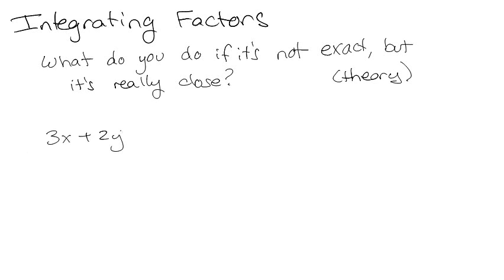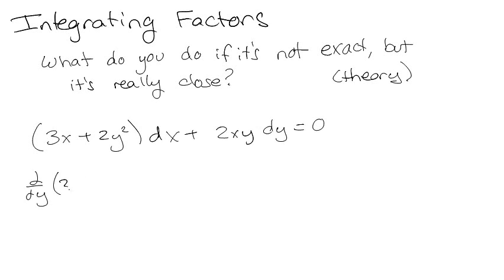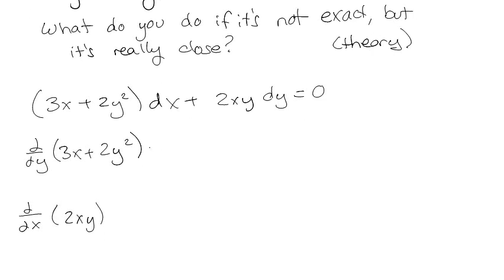So we have (3x + 2y²)dx + 2xy dy = 0. Now we know, theoretically, that the partial derivative with respect to y of the first term should equal the partial derivative with respect to x of the second term if we want to use the theory of exact differential equations on it.